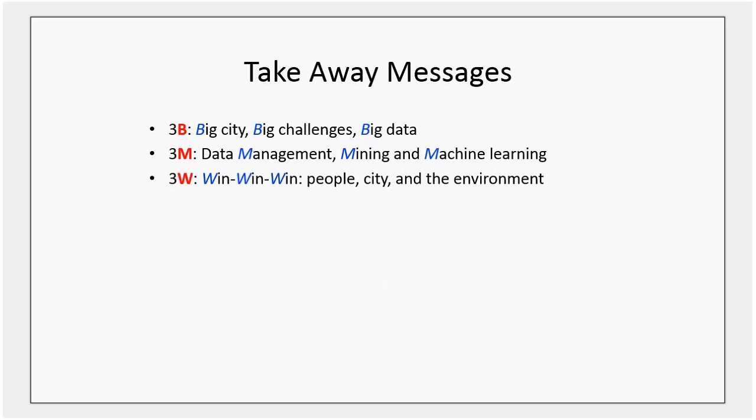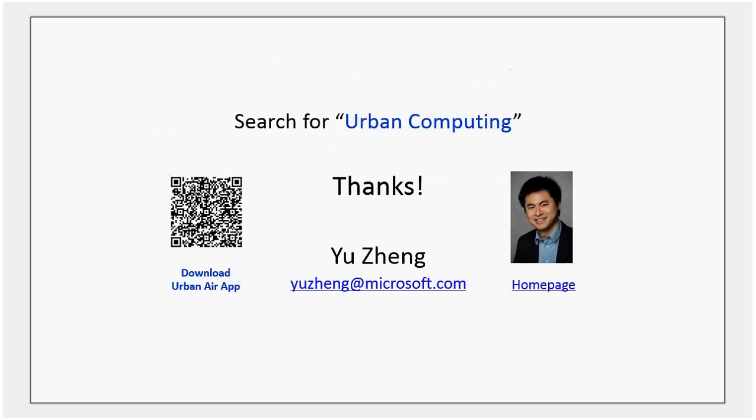To summarize urban computing: our vision is '3B' — using big data to tackle big challenges in big cities. Our methodology is '3M' — data management, data mining, and machine learning. Our results represent a win-win-win situation among people, city, and environment. In even shorter form: it's 3BMW. That's urban computing. For more information, you can search for 'urban computing' on the internet to find slide decks, papers, and even datasets. I'm now handing the talk to Professor Zhu from Jiao Tong University.